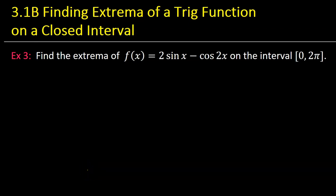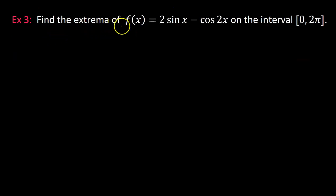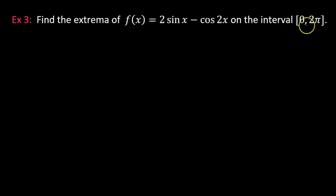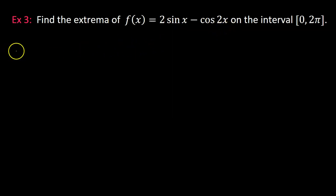In this video, I will show you how to find the extrema of a trig function on a closed interval. Let's find the extrema of f(x) = 2 sin(x) − cos(2x) on the closed interval 0 to 2π. We've got some trig functions going on — this should be interesting.